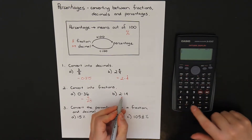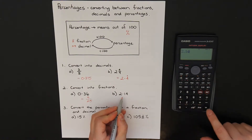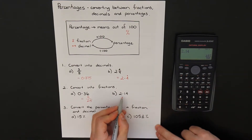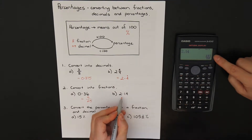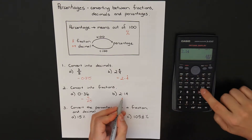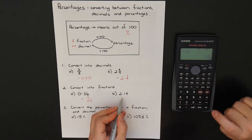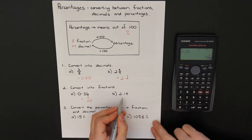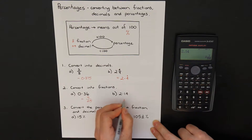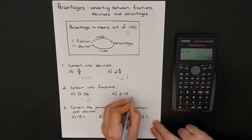Same thing for the next one — type in 2.14, press equals, it changes it straight into a fraction. It's an improper fraction, so I should change that into a mixed numeral. I press shift and the SD button, and that changes it to be 2 and 7 over 50.